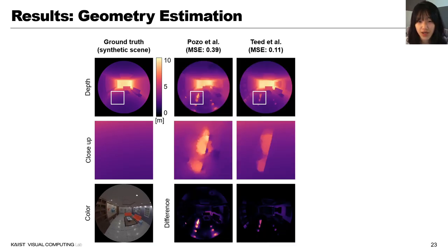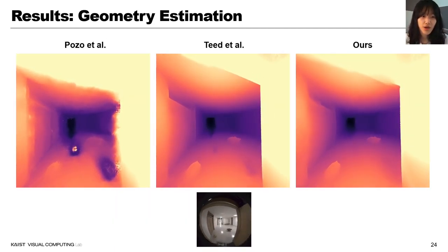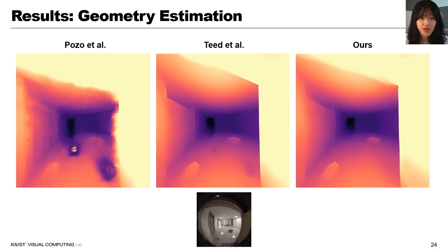Now, we demonstrate our result of geometry estimation. We quantitatively compare the geometry accuracy using synthetic scene. Where Pozo et al. and Teed et al. present higher depth errors in specular region, ours shows more accurate depth results. This is result from real scene. Our method shows plausible depth values on diffuse surfaces.